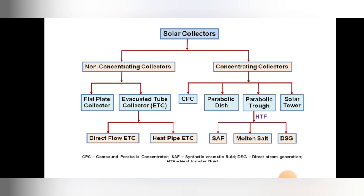The first type of concentrating collector is CPC — Compound Parabolic Concentrator. The second type is the parabolic dish, which is like the dish receiver of a TV antenna. We will see in detail how the parabolic dish is structured and how it works. The third type is the parabolic trough.